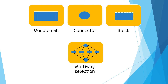The next symbol is called module call. This is used for calling external modules — when we are taking data or connecting our solution with an outer solution by using module call. After that, the next symbol is called connector. It is a circle, used to connect different flow lines or to show the continuity of a flowchart on separate pages.